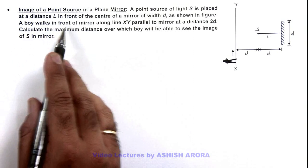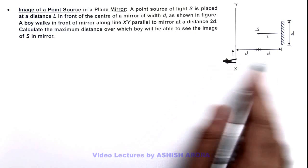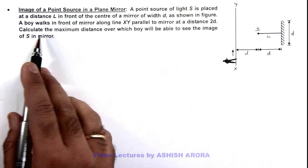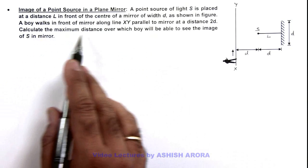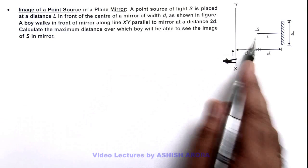A boy walks in front of mirror along this line XY parallel to mirror at a distance 2d from it, and we are required to calculate the maximum distance over which the boy will be able to see the image of S in the mirror.